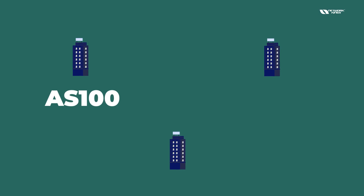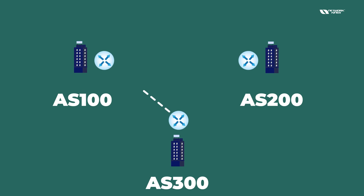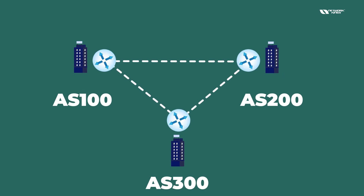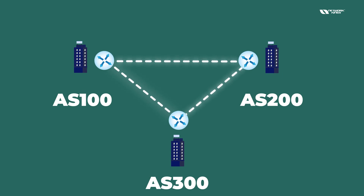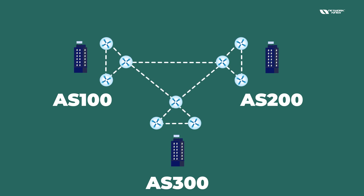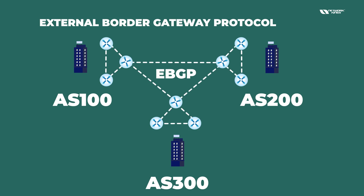Each company will have a different AS number — like 100, 200, 300. BGP is also known as AS-to-AS protocol, meaning they connect with each other through AS connectivity. All devices can connect with each other and you can have multiple devices. When we connect between different AS numbers, this is called eBGP — External Border Gateway Protocol.